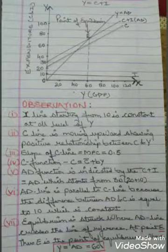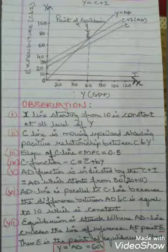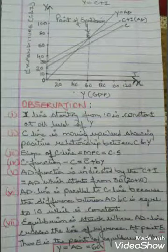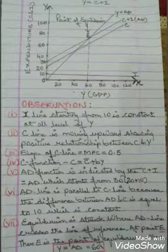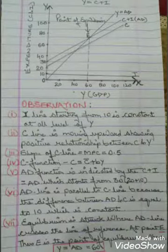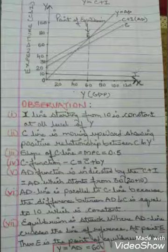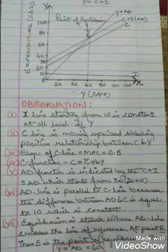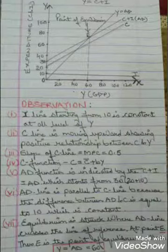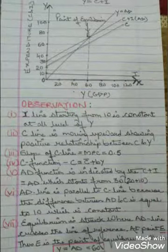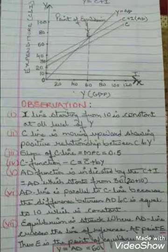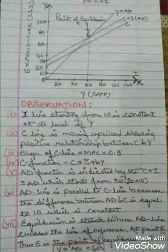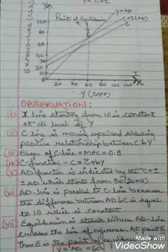The AD function is represented by C plus I. The C plus I line starts from 30 because it consists of C starting from 20 and I starting from 10 — so 20 plus 10 equals 30. The AD line is parallel to the C line because the difference between AD and C, which is investment, is constant at 10 at all levels of income.